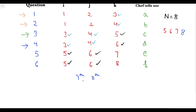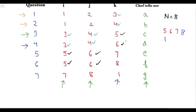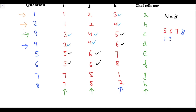We will use A[7] and A[8] to find the remaining elements. In question seven, i=7, j=8, k=1, and Chef tells XOR is G. Since we know A[7], A[8] and G, we can find A[1]. In question eight, i=7, j=8, k=2, and Chef tells XOR is H. Since we know A[7], A[8] and H, we can find A[2]. So now we know the first and second elements as well.